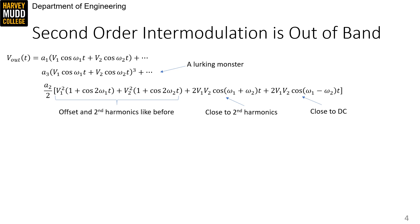However, the intermodulation also creates new frequency content. There's a term at omega-1 plus omega-2, which is close to the second harmonic, and there's a term at omega-1 minus omega-2, which is close to DC. These intermodulation terms are each bigger than the harmonic distortion term by a factor of two.